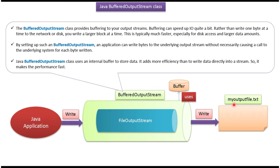Here you can see MyOutputFile.Text and a Java application. A Java application can use Buffered Output Stream to write data to text files. Buffered Output Stream provides buffering to your output stream.